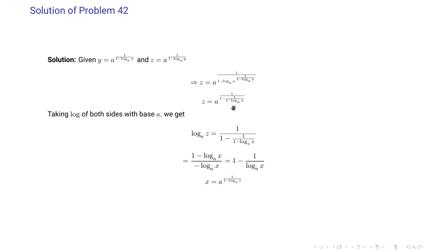We take log of both sides. When we take LCM of the denominator term, (1 minus log x base a) minus 1 gives us a cancellation, and we remain with minus log x base a in the denominator and (1 minus log x base a) in the numerator. Taking log of the right hand side with base a gives 1, so what remains is the power. We find log_a(z) equals this expression, and simplifying further gives 1 minus 1/(log x base a).